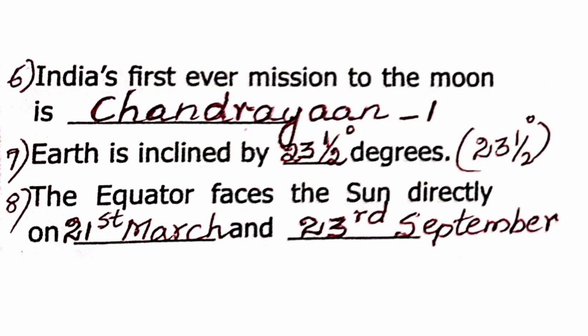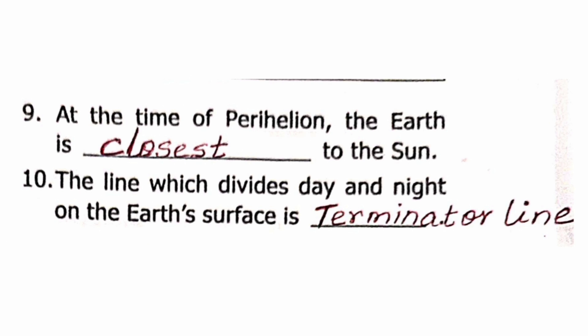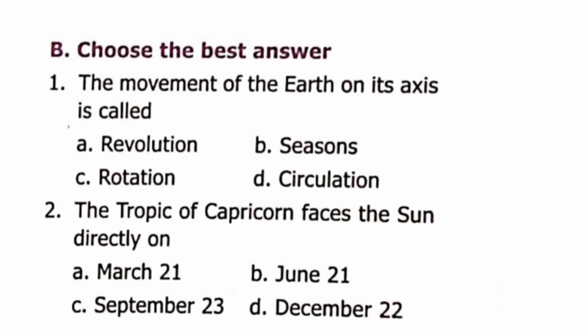Question 8: The equator faces the Sun directly on 21st March and 23rd September. Question 9: At the time of Perihelion, the Earth is closest to the Sun. Question 10: The line which divides day and night on the Earth's surface is the Terminator line.